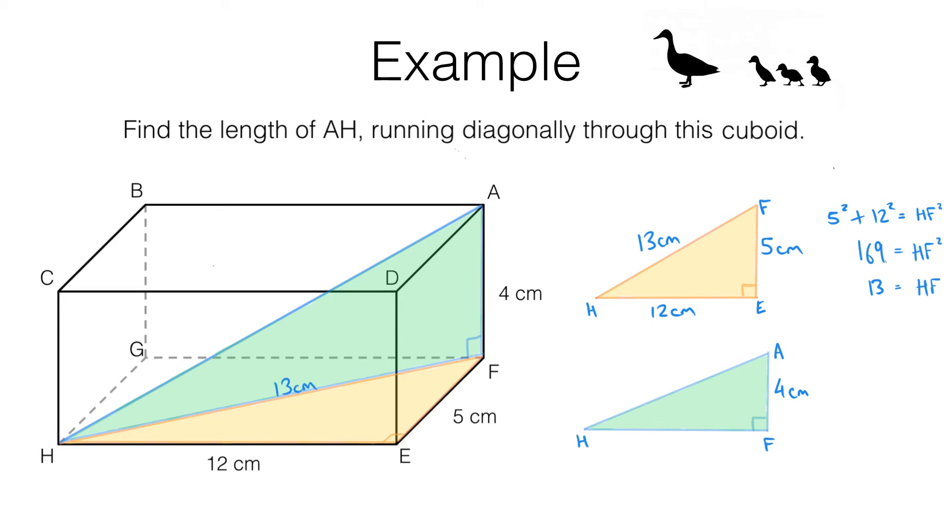So here's what we found. HF, that's 13 centimetres, which means we can label this onto our green triangle. That there is 13 centimetres. Now we can use Pythagoras' theorem with the green triangle to find length AH.